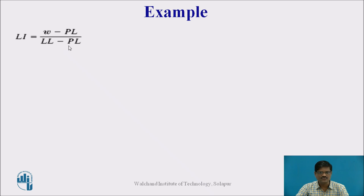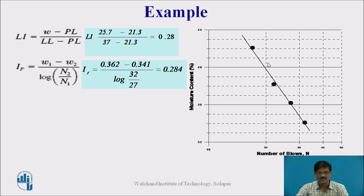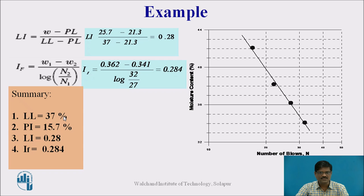For the liquidity index, substituting natural water content = 25.7, plastic limit = 21.3, liquid limit = 37, we get LI = 0.28. For the flow index, taking the slope of the flow curve between two points (water contents of 36% and 34%), the flow index comes out to be 0.284. Summary: liquid limit = 37%, plasticity index = 15.7, liquidity index = 0.28, flow index = 0.284.